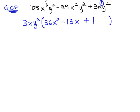With 3 terms, we can factor using the AC method. 36 times 1 is 36, and negative 13 on the bottom. We're looking for numbers that multiply to 36 and add to negative 13.